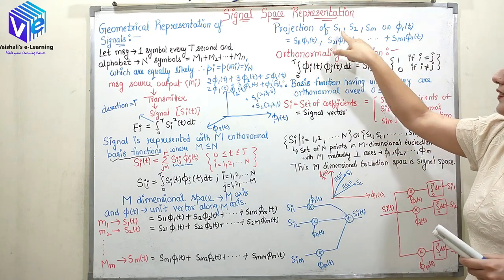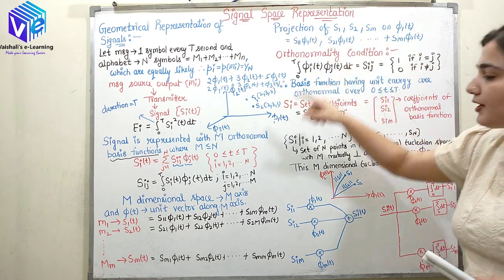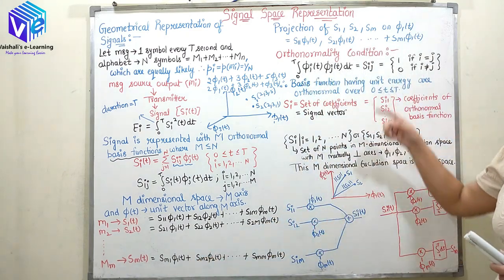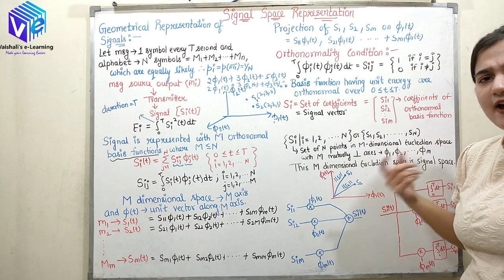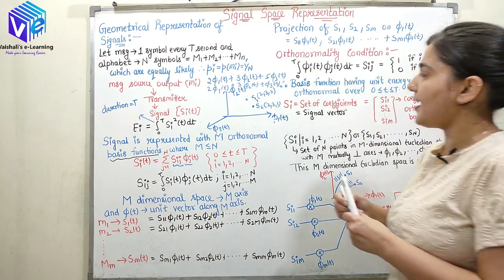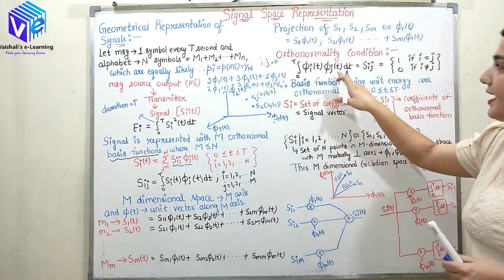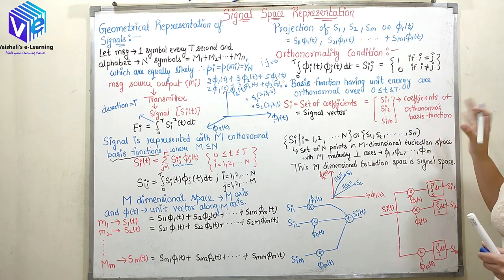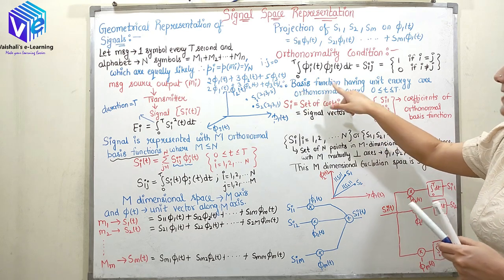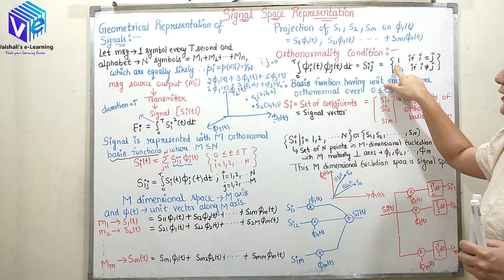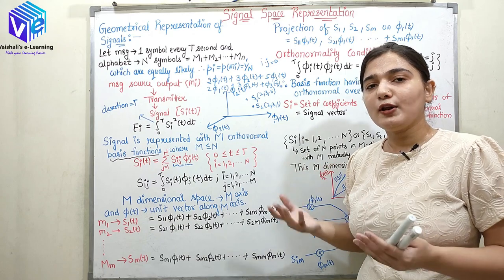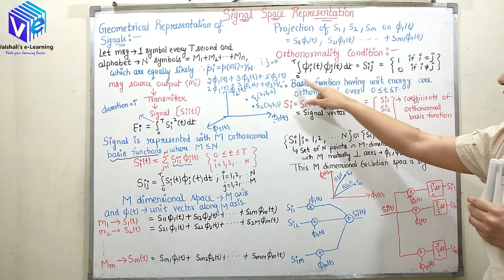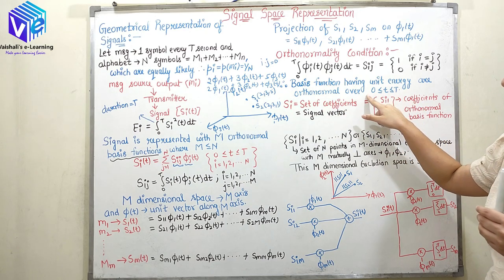I can vary from 1 to n because I have n symbols, and j varies from 1 to m because I have m-dimensional space. S11, S21 up to SM1 are the projections on phi1(t). The orthonormality condition: phi_i times phi_j equals 1 if i equals j, and 0 if i is not equal to j. The basis function has unit energy because amplitude equals 1, so the energy of the basis function will always be 1. Also, the basis function is only defined in the interval 0 to capital T.